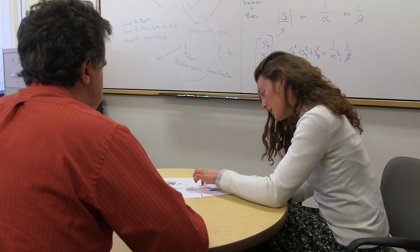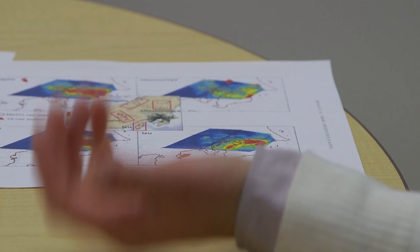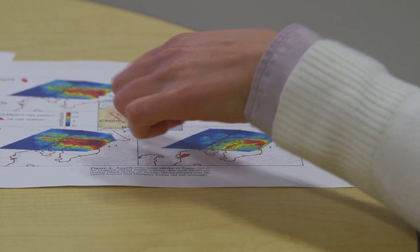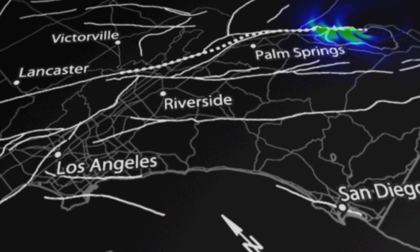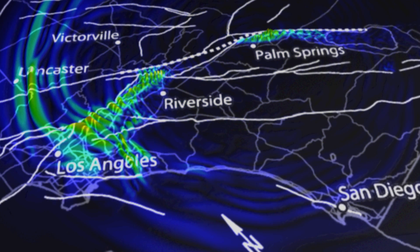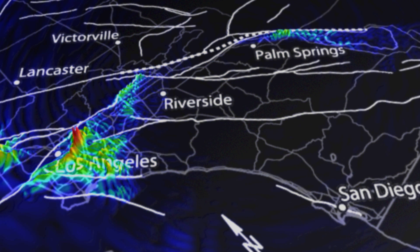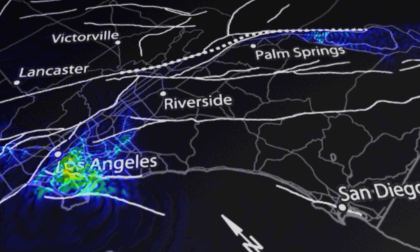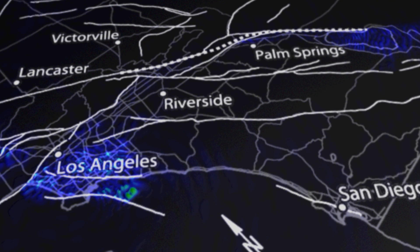Those sediments are not compacted — it's like sand on the beach, so they are very compliant and they can move more easily. The waves travel through that corridor towards Los Angeles and are essentially guided into the sedimentary basin that underlies Los Angeles. Once they're in that basin, they reverberate, they get amplified, and they cause stronger shaking than would otherwise occur.